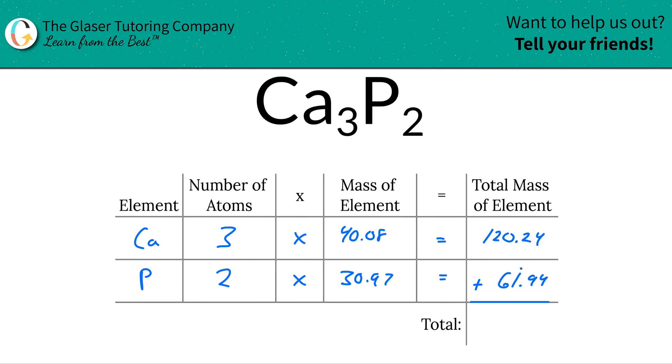And then, to find the total mass of the entire compound, literally just add this column together. Add up all the totals of each particular element. And that should work out to be 182.18. And since we're solving for molar mass, this is going to be in terms of grams per mole. And that's all there is to it.